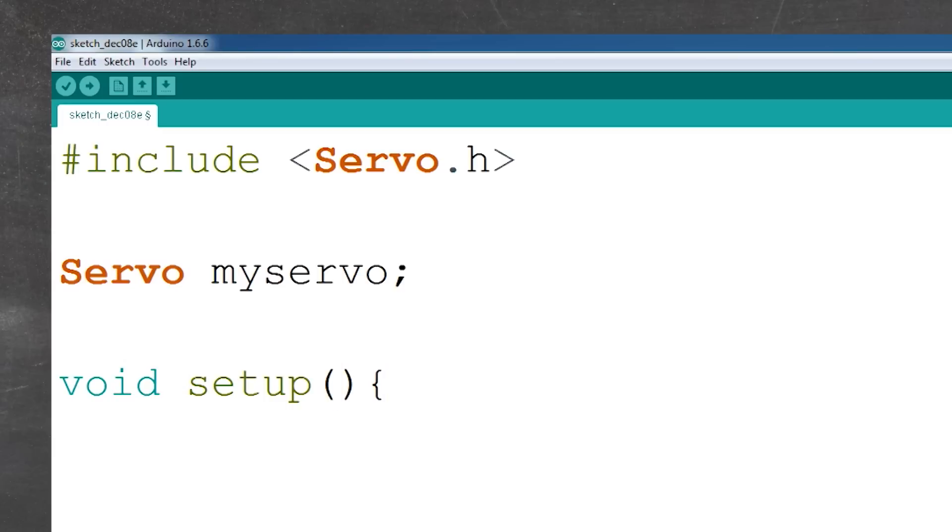Enter and it automatically generates that closed bracket. Make sure your cursor is in between those two brackets. This is where we're going to attach our servo. We write myServo.attach and then write 9 inside and then semicolon. Essentially, pin 9 is going to be the one that controls our servo.